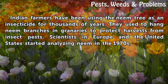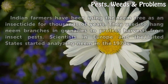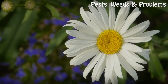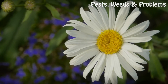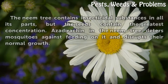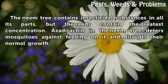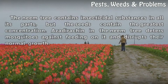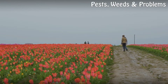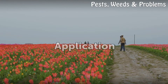The neem tree contains insecticidal substances in all its parts, but the seeds contain the greatest concentration. Azadirachtin in the neem tree deters mosquitoes against feeding on it and disrupts their normal growth.